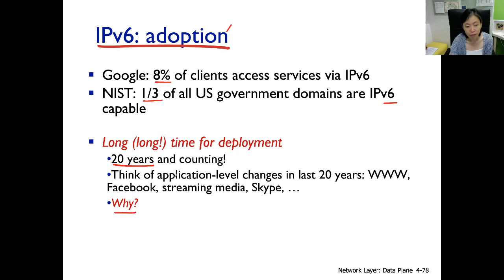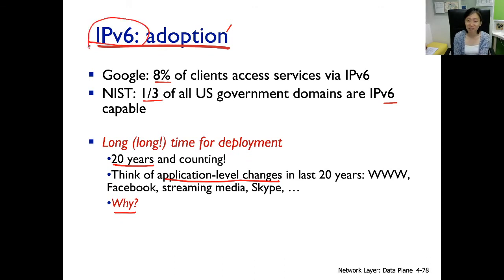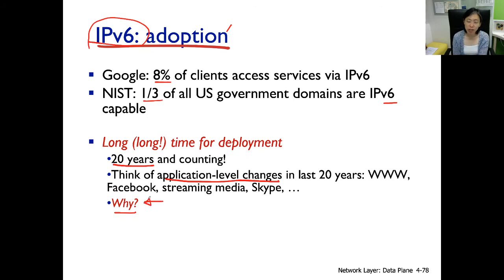Why is adoption so slow? At the application layer, new applications rise — Instagram, Facebook, Netflix, Zoom, YouTube — and within each service, protocols get upgraded quickly from one version to another. But unlike application layer changes, network layer changes seem very hard to make. It's not undoable — we just need to upgrade the routers, reconfigure the clients. So why is this so hard, and why is it so much easier to upgrade one app?